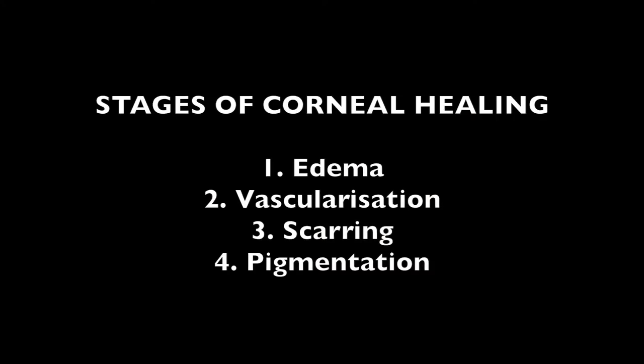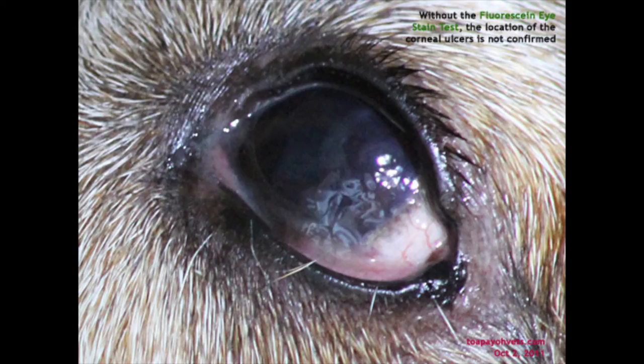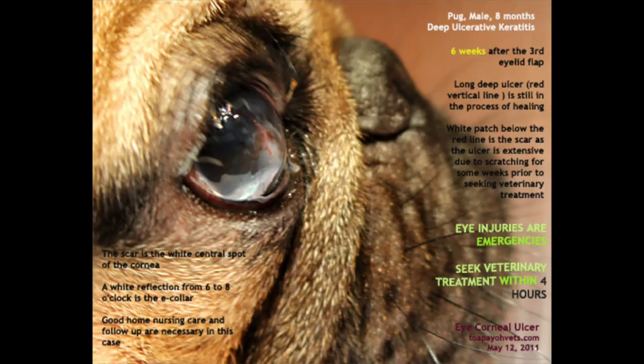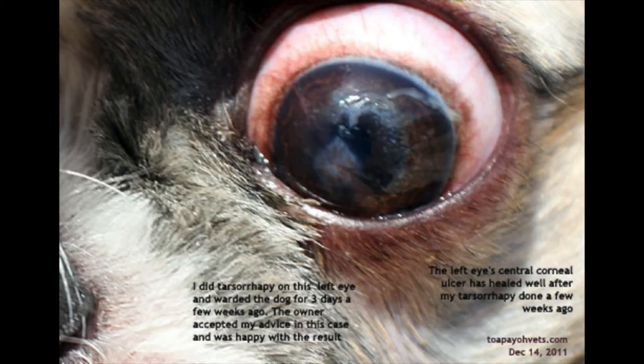The cornea heals in four stages: edema, vascularization, scarring, and pigmentation. Stage 1, edema, is the accumulation of fluid in the cornea — we can see fluid has accumulated in this example. Stage 2, vascularization, is the formation of new blood vessels in the cornea, which is usually free of blood vessels. The redness of the cornea is caused by this formation of new blood vessels.